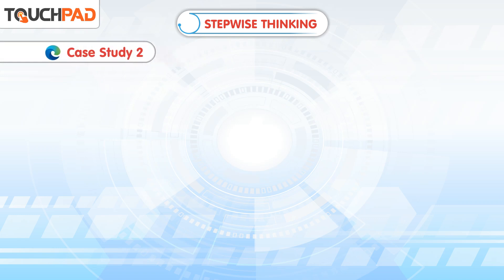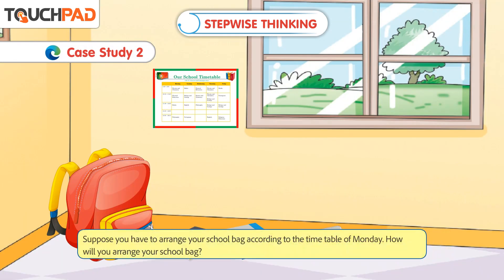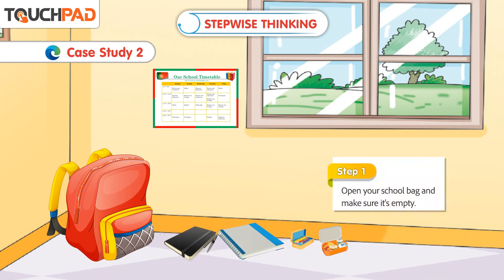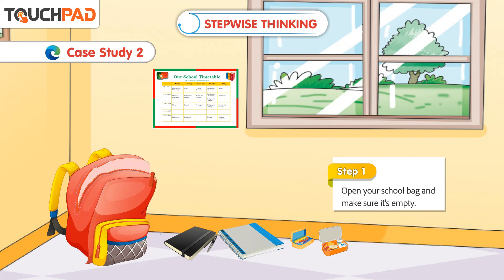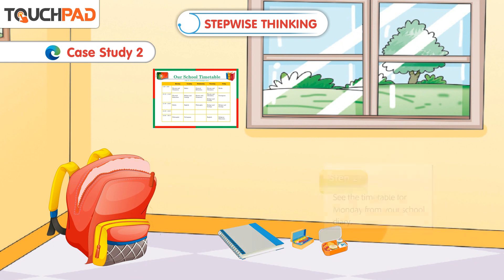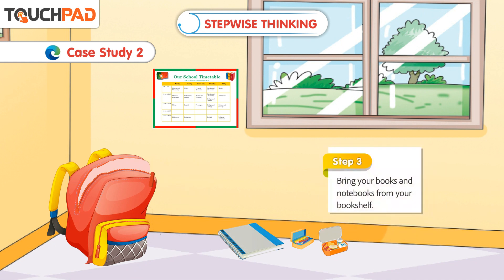Case Study 2: Suppose you have to arrange your school bag according to the timetable of Monday. How will you arrange your school bag? To do this, follow these steps. Step 1: Open your school bag and make sure it's empty. Step 2: See the timetable for Monday from your school diary. Step 3: Bring your books and notebooks from your bookshelf.